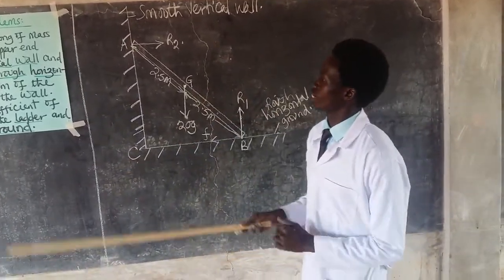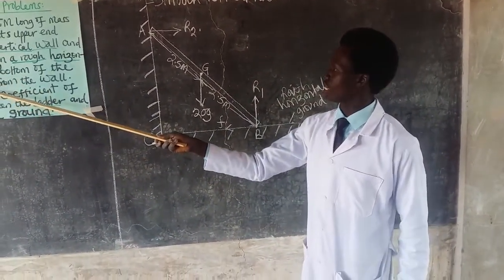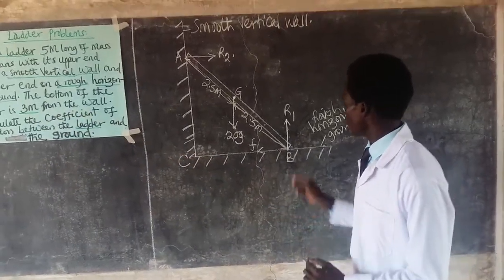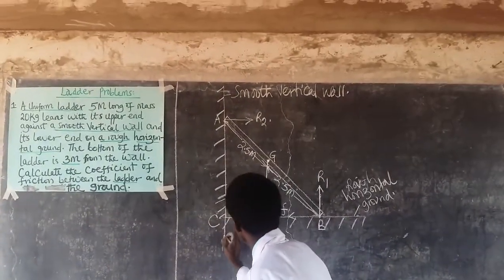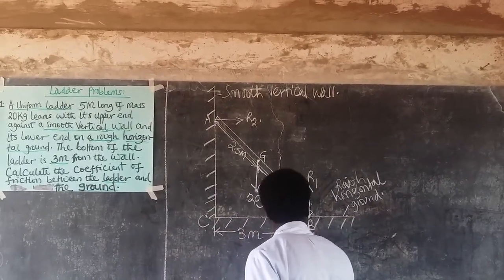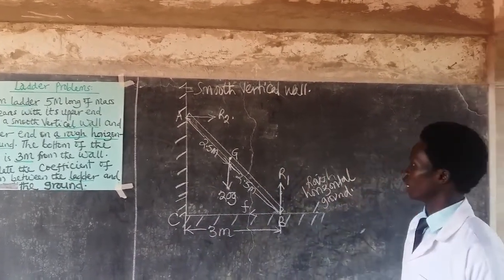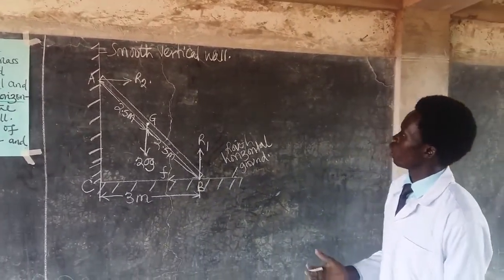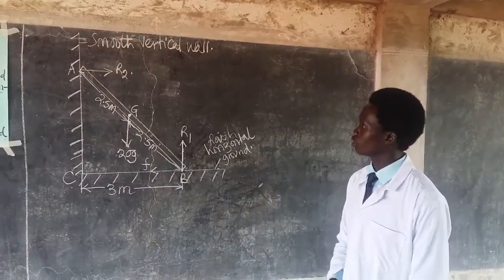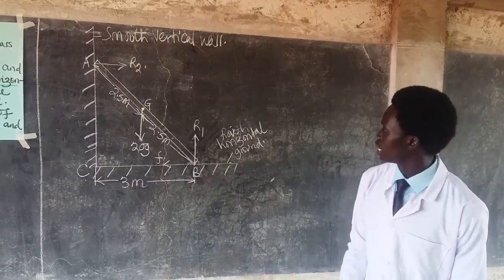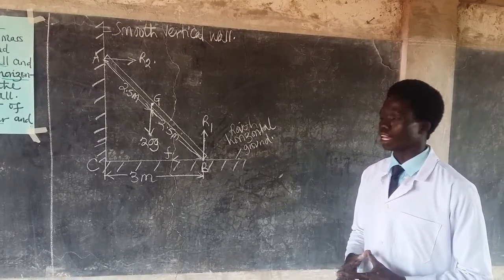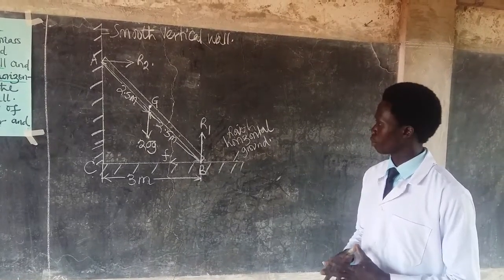The bottom of the ladder at point B is 3 meters from the wall. With the diagram complete, we are now going to consider both translational equilibrium and rotational equilibrium, since the ladder is in equilibrium and the resultant force acting on it is zero.